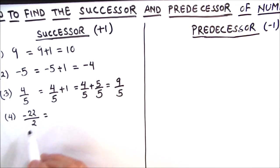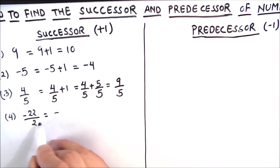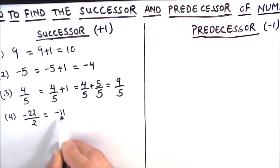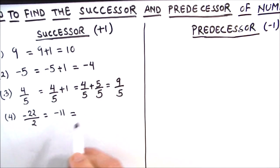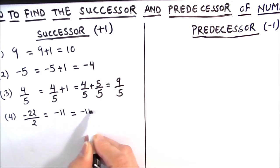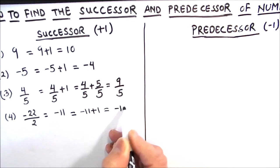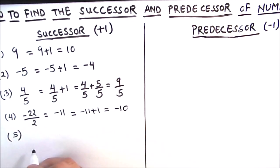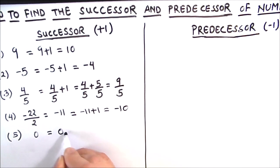Next, let's take negative 22/2. For finding the successor of this fraction, we are going to simplify it first. Since we have a common factor of 2, that gives us negative 11. Now we add 1 to negative 11, so negative 11 plus 1 is negative 10. Our last successor example is 0, and the successor of 0 is 0 plus 1, which equals 1.